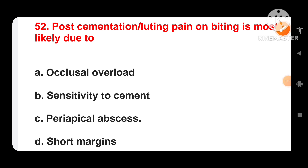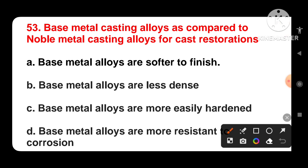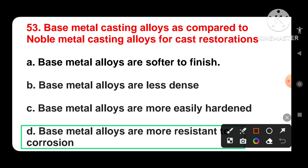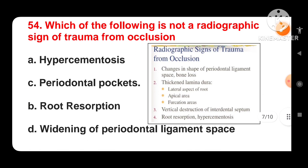Next question: base metal casting alloys as compared to noble metal casting alloys for cast restorations — options are: base metal alloys are softer to finish, base metal alloys are less dense, base metal alloys are more easily hardened, or base metal alloys are more resistant to corrosion.